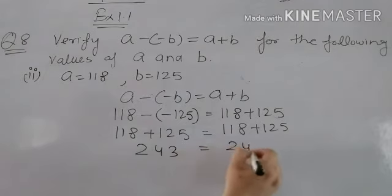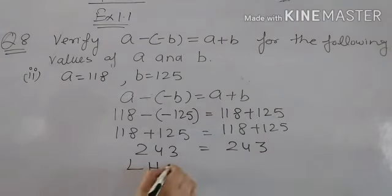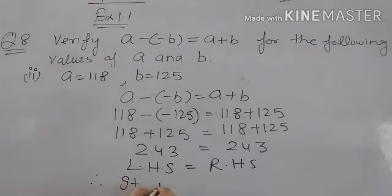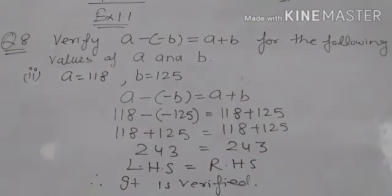Adding both we get 243 on both sides. So both sides are equal. We write LHS equals RHS, and the statement is verified for the second part.